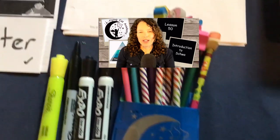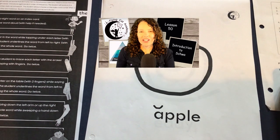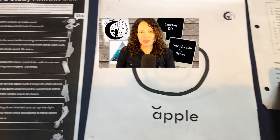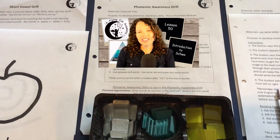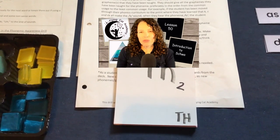For the short vowel drill, you'll need the teacher instruction sheet, the keyword pictures, and the keyword sentence. Remember that once the student has mastered the short vowel sounds, you will discontinue this drill. For the phonemic awareness drill, you'll need the teacher instruction sheets and the colored tiles for the student. For the visual drill and auditory drill, you'll need the teacher instruction sheets and the student's card pack, remembering that you are taking out the sounds as they are mastered.